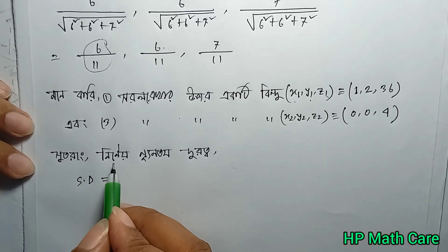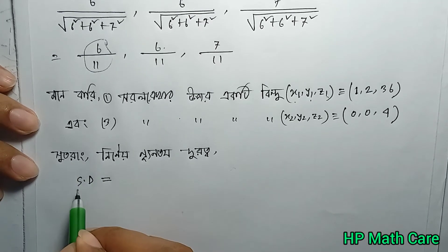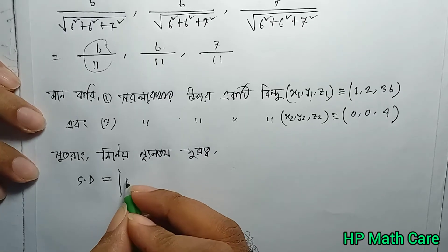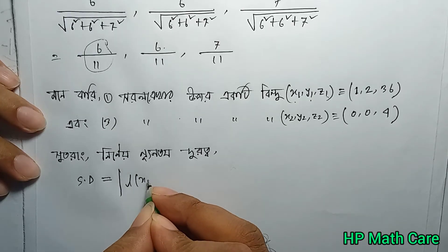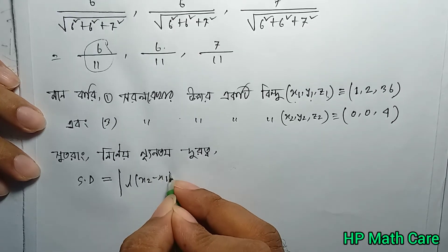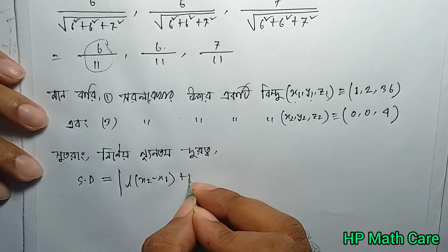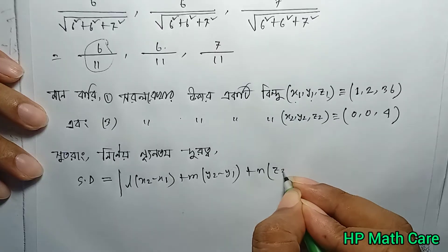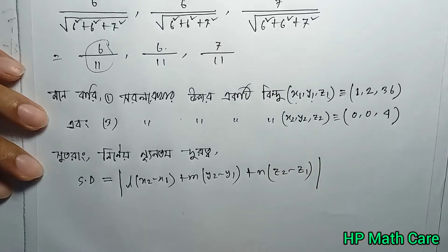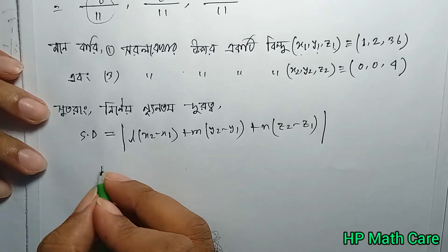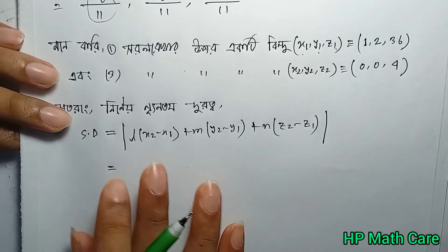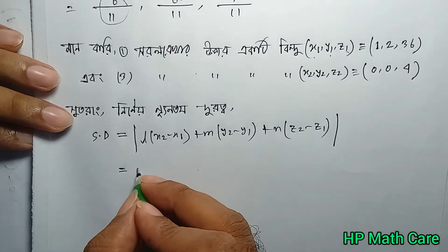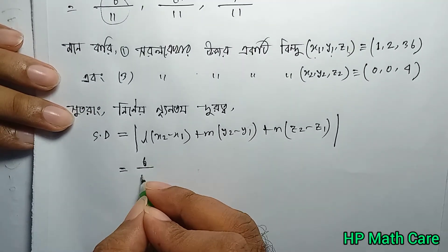Using the distance formula: l into (x2 minus x1) plus m into (y2 minus y1) plus n into (z2 minus z1). Let's take the main value, which is 6 by 11.